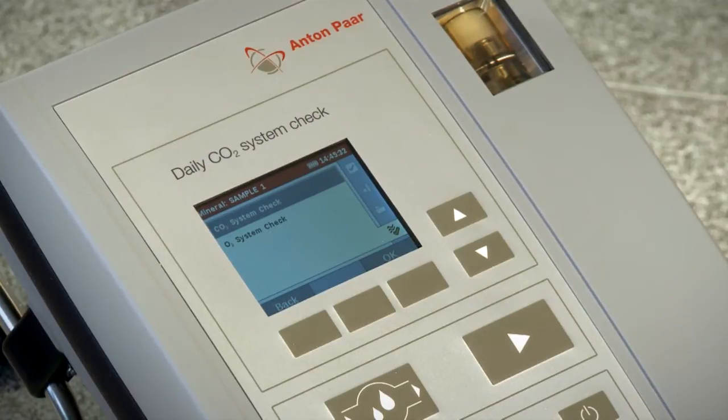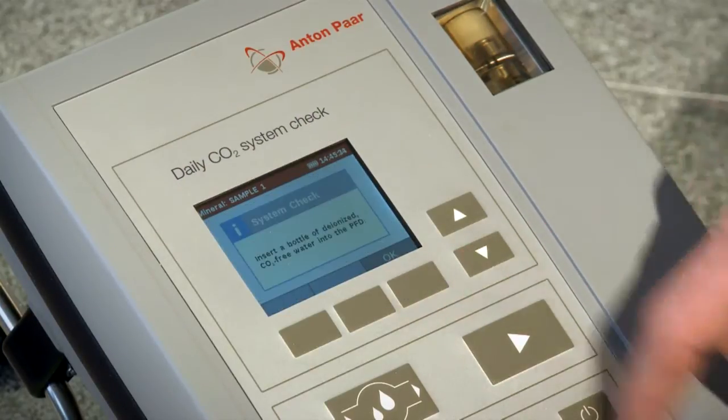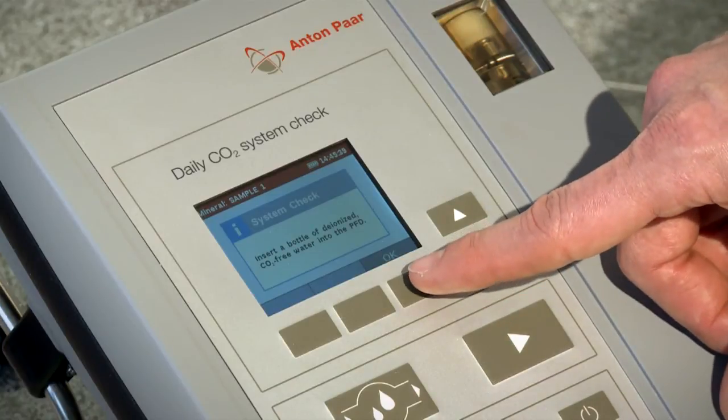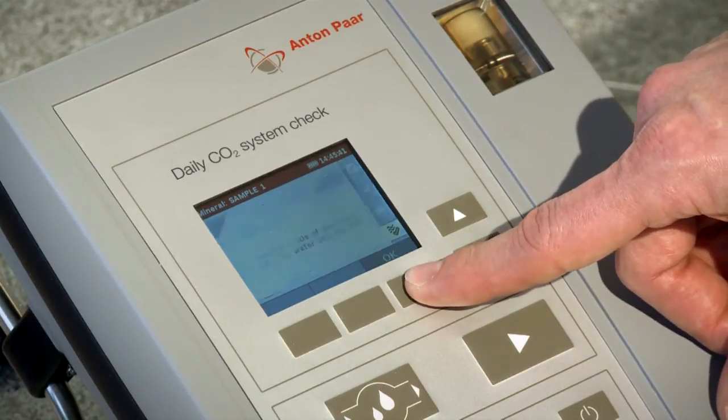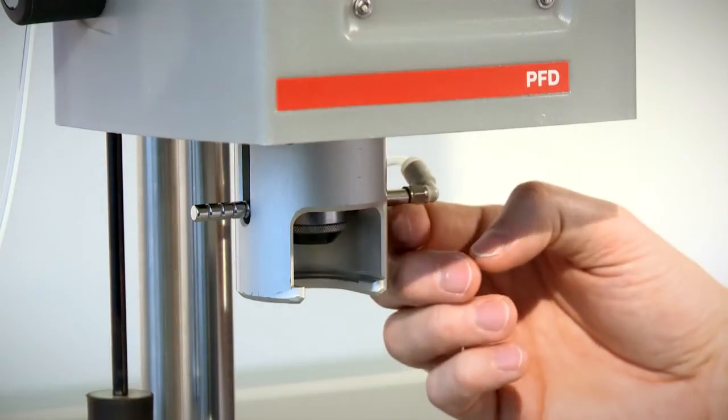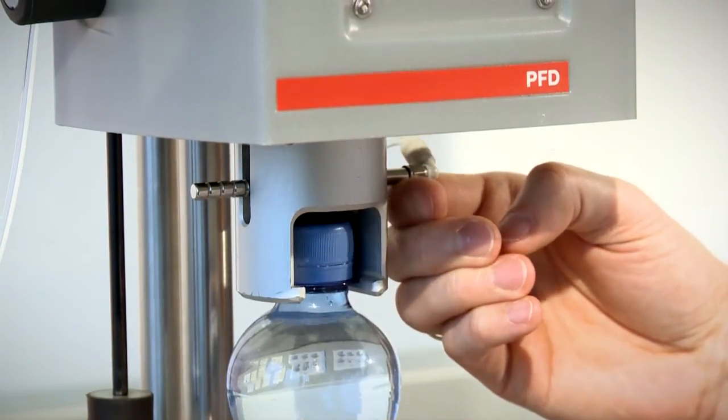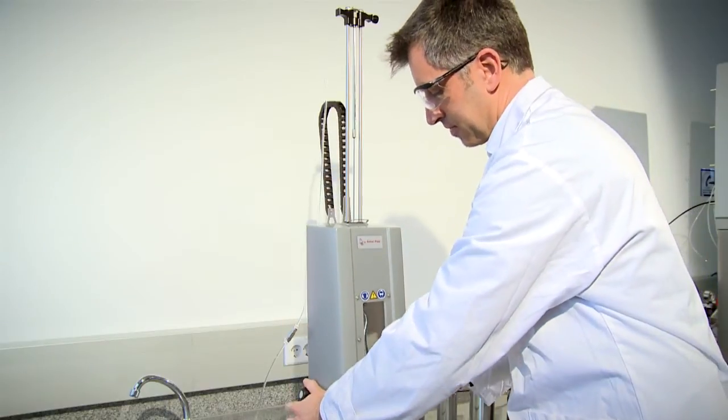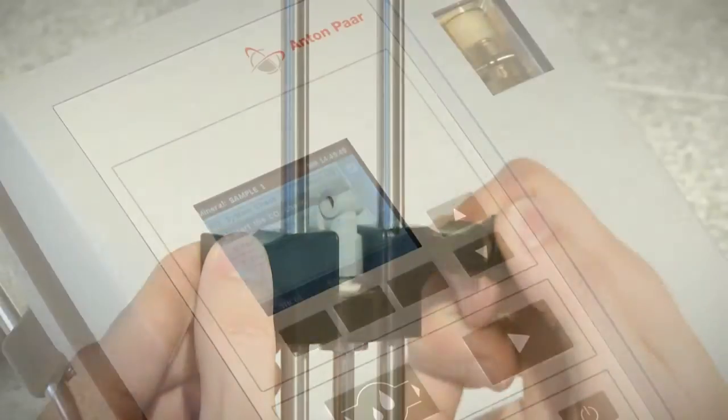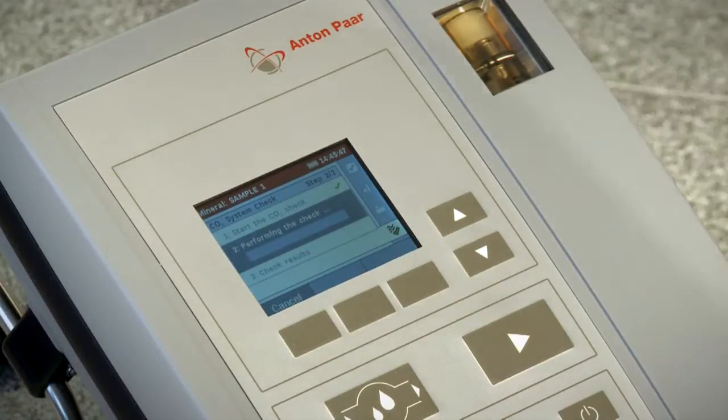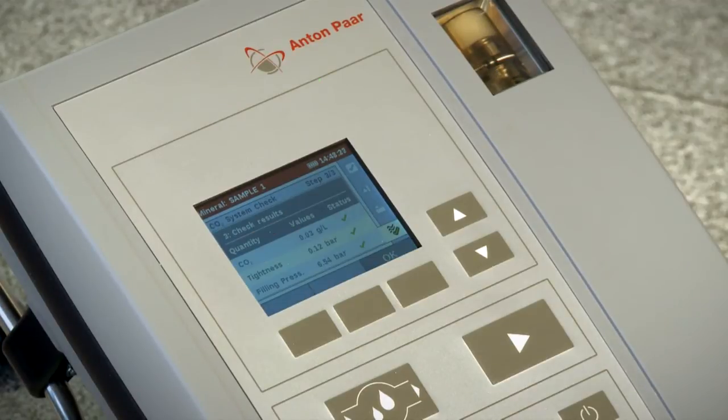The implemented CO2 system check is recommended daily before you start the first measurement procedure. Using deionized CO2-free water, you can have the system automatically check the zero point of the CO2 measurement and the tightness of the measuring chamber. These check results give you a reliable go for a long working day.